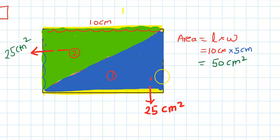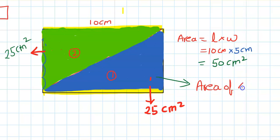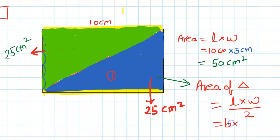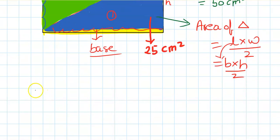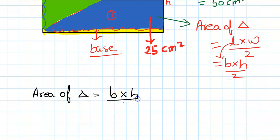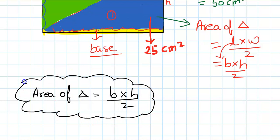So what is the formula for the triangle? It was length times width divided by 2. We replace length with base and width with height, because the length is essentially the base and the width is the height. So the area of a triangle is base times height divided by 2.